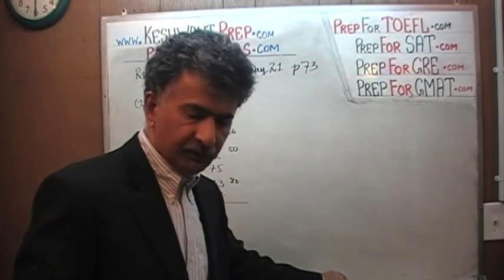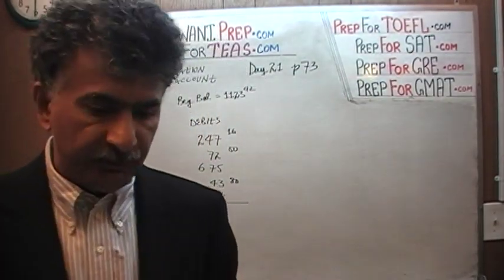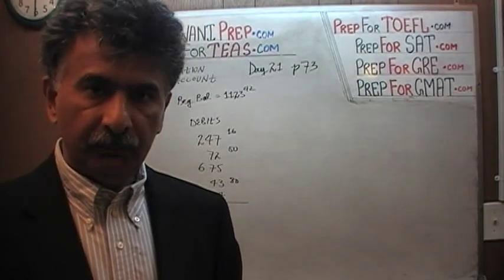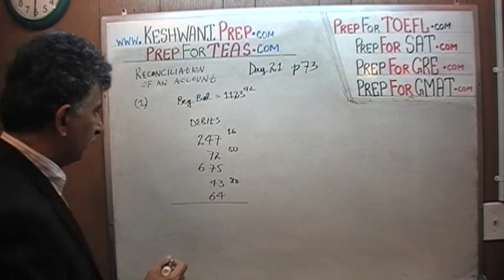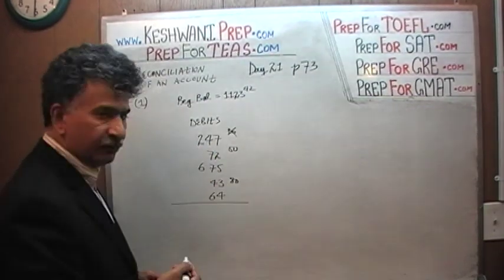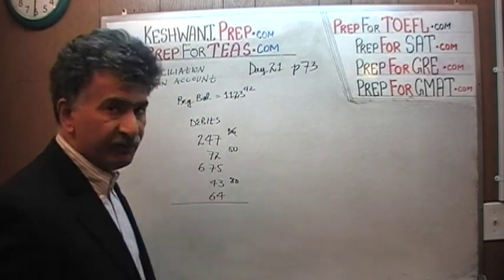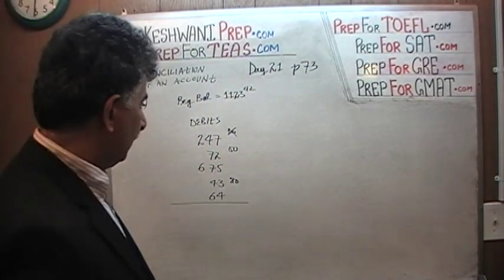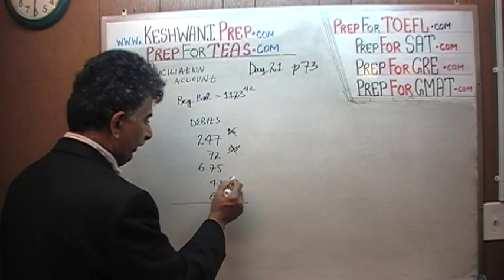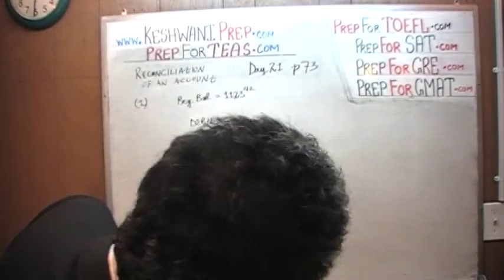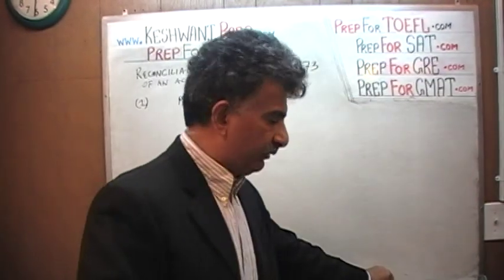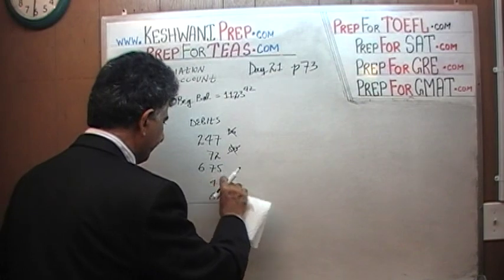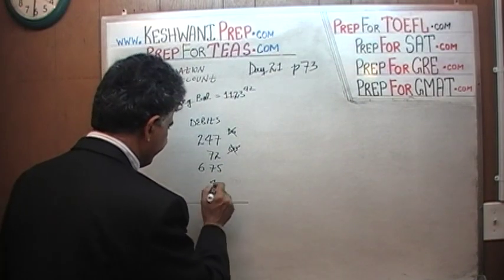Now listen — this is a multiple choice question, so we don't have to be very precise. As long as we have a decent approximation, we should not have too much trouble figuring out the right answer. So we are going to approximate; we are not going to waste time writing out the precise amount. $247.16 — we're going to ignore the 16 cents. $72.50 — it's right on the borderline; I'm going to ignore it. $43.80 — let's round that to $44.